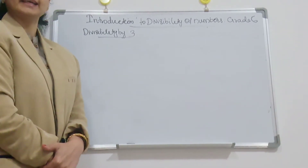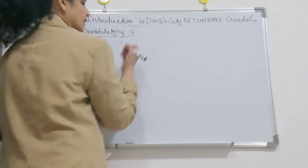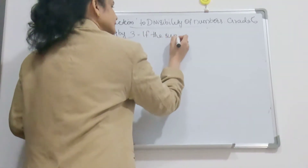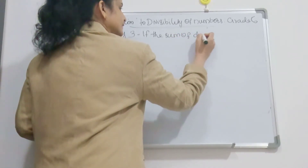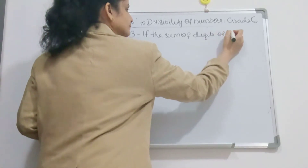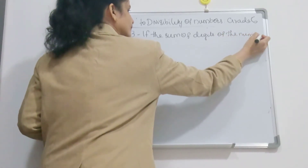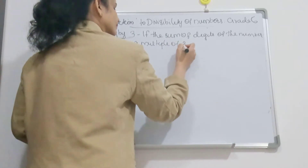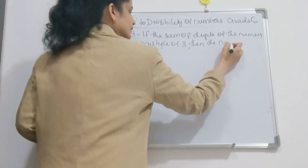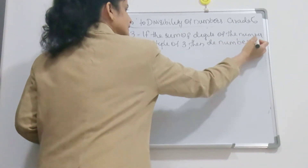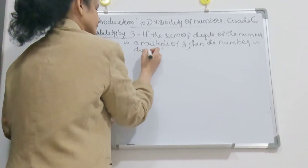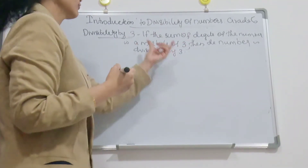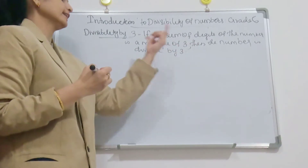The same method applies for both 3 and 9. First I will write the rule and then explain. If the sum of the digits of a number is a multiple of 3, then the whole number is divisible by 3.